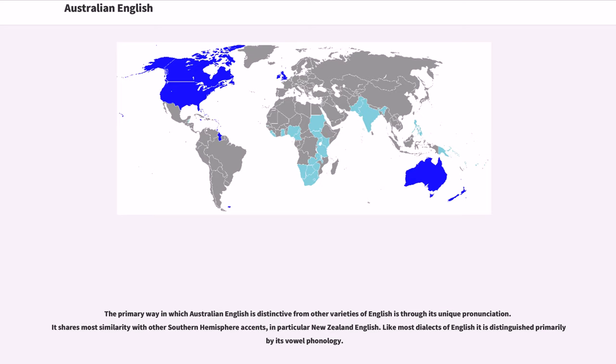The primary way in which Australian English is distinctive from other varieties of English is through its unique pronunciation. It shares most similarity with other Southern Hemisphere accents, in particular New Zealand English. Like most dialects of English it is distinguished primarily by its vowel phonology.